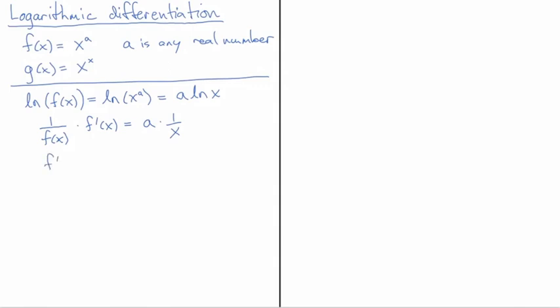Now I can isolate and find the derivative of x to the a. And it is a times 1 over x times f of x, which I can go back to the definition of f of x, that's x to the a, which does not quite look like the power rule yet. But when I realize that I have x as a base on the top and the bottom, I can take the difference of their powers, and I end up with a times x to the a minus 1.